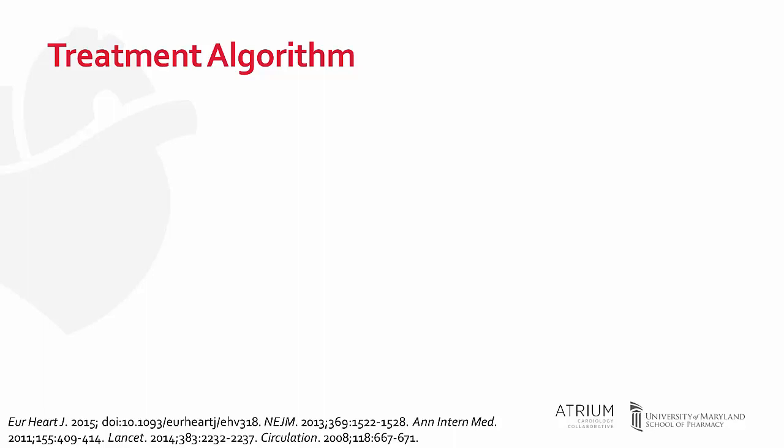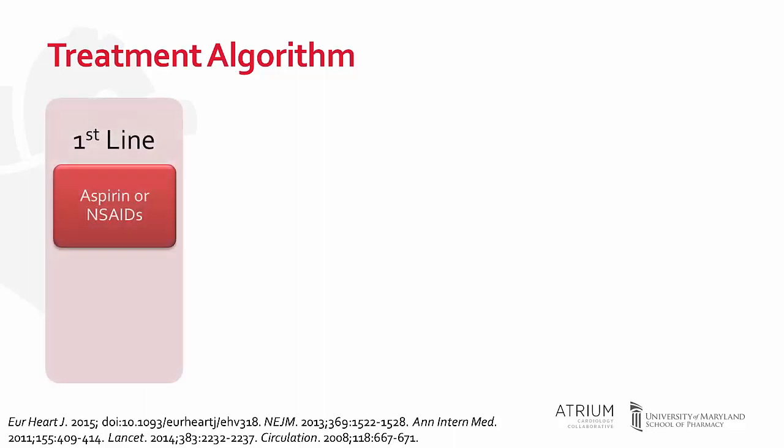Patients with underlying renal or hepatic dysfunction were also excluded. Thus, treatment should be individualized for these patient populations. First-line therapy includes a combination of either aspirin at high anti-inflammatory doses or NSAIDs, plus colchicine.